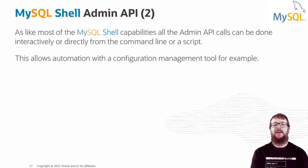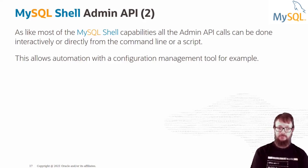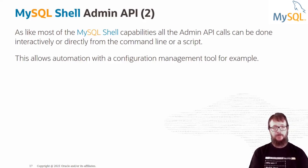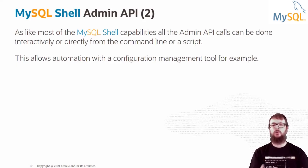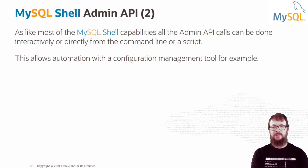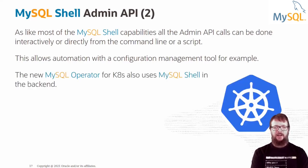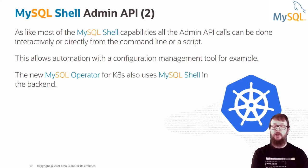Admin API calls can be done interactively — which is what many people do at first — but also from the command line or from a script. This means you can use these calls in configuration management tools like Puppet, Chef, or Ansible. The new MySQL Operator for Kubernetes also uses MySQL Shell to perform all these tasks. The Admin API is available using the DBA global object in the shell.